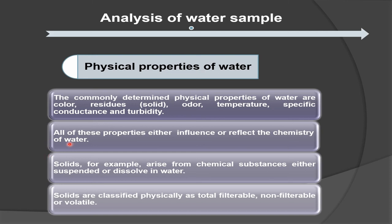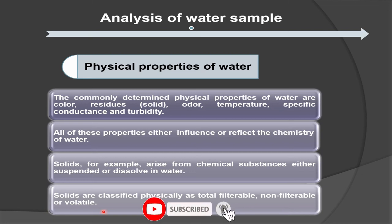All of these properties either influence or reflect the chemistry of water. Solids, for example, arise from chemical substances — either suspended or dissolved in water. Solids are classified physically as total, filterable, non-filterable, or volatile. So solids are either suspended or dissolved in water, and what is dissolved can be filterable, non-filterable, or volatile.